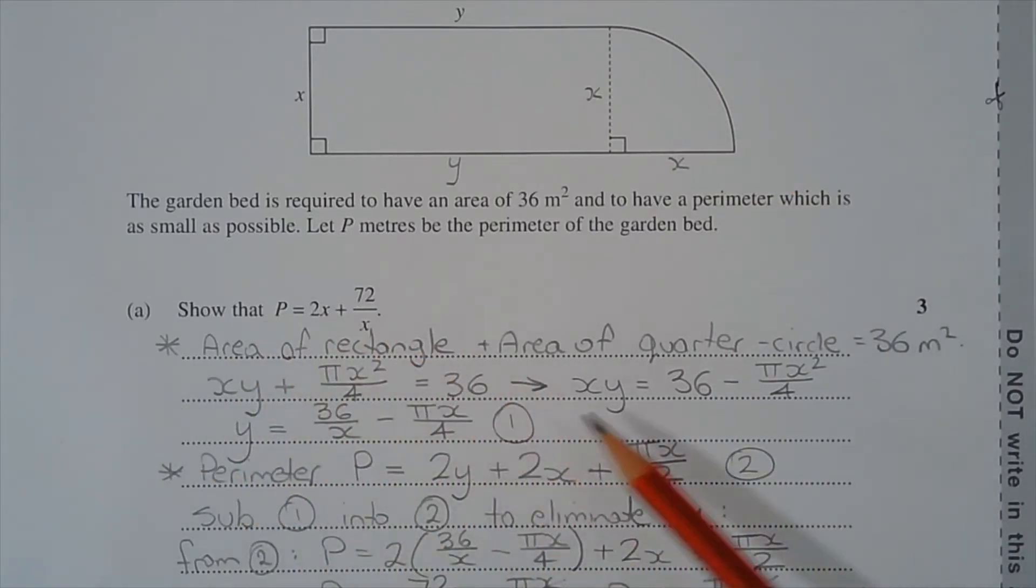Now rearranging this equation to make xy the subject, we have xy equals 36 minus π x² over 4. Dividing all terms by x, we get y equals 36 over x minus π x over 4, and we'll call that equation number 1.